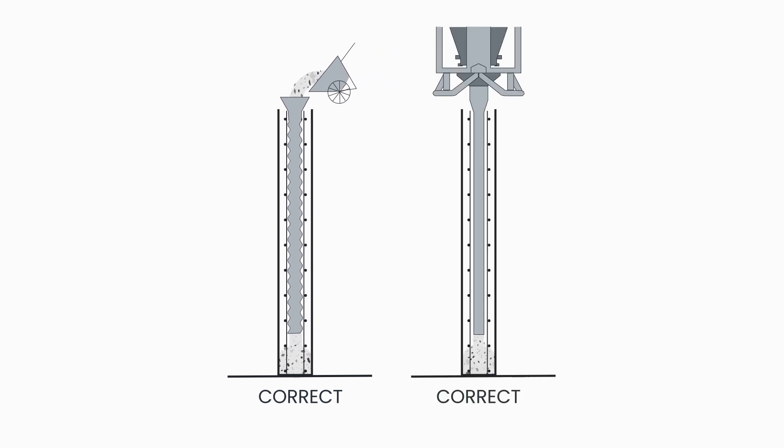When placing with crane and bucket, use a flexible drop chute connected to a collector cone, which is permanently attached to the bucket frame.